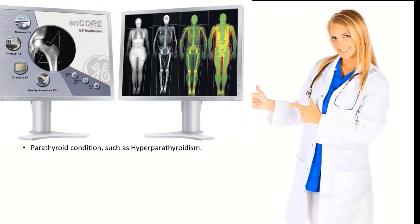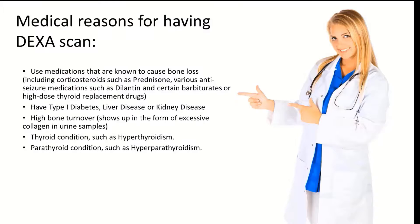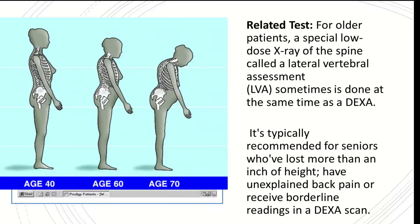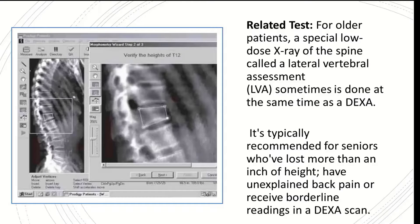In addition to the normal DEXA scan, the physician may order a related test for older patients called a lateral vertebral assessment, or LVA. This is a special low-dose x-ray of the spine, sometimes done at the same time as the DEXA. It is typically recommended for seniors who have lost more than an inch of height, have unexplained back pain, or receive borderline readings on their DEXA scan.